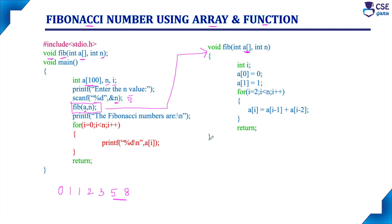The user-defined function contains the complete logic of the program. Here, the array and n are passed as parameters, so n holds the value 5. Inside the function, i is declared as an integer variable used within the for loop. We initialize a[0] with the first Fibonacci value, which is 0, and a[1] with the second Fibonacci value, which is 1. With these first two values, we can generate the remaining numbers, so these initializations are done first.